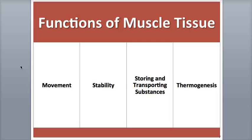Now let's take a look at the four major functions of muscle tissue as a whole. The first function is producing body movements. When muscles contract, they pull on bones of the skeleton to enable overall body movement, such as during walking, running, or swimming. They also enable smaller, more localized movements, such as typing on a keyboard or playing the guitar.